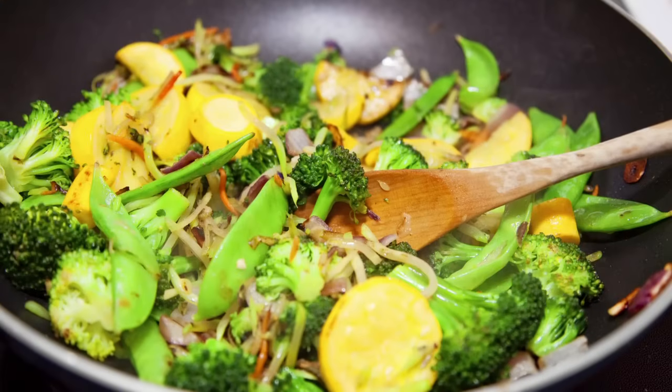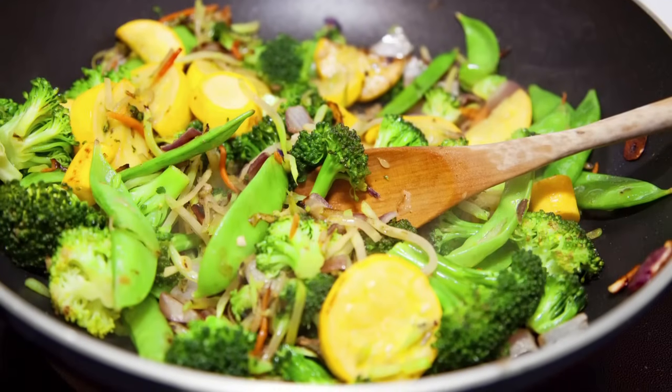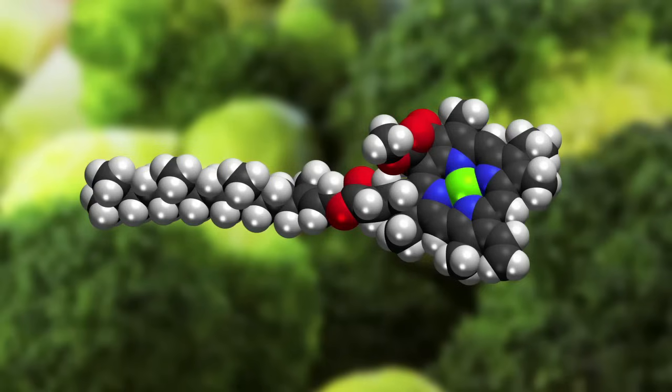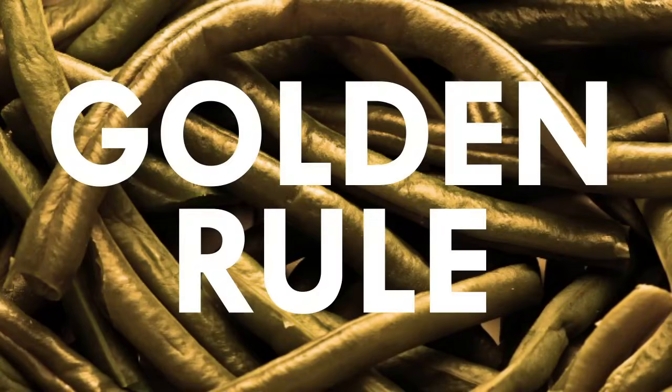When they're heated, the vegetable cells are broken down and release acid, which is otherwise kept separate from living cells housing chlorophyll. The acids will quickly replace the magnesium with hydrogen, turning your veggies from vibrant green to dull. So here's a golden rule to keep a vibrant veggie.